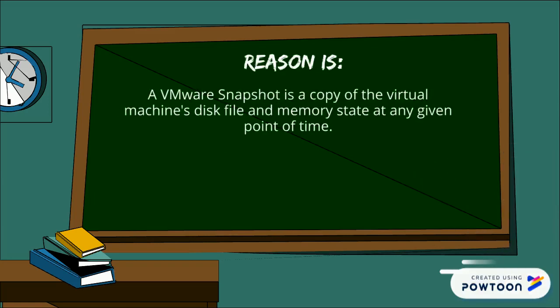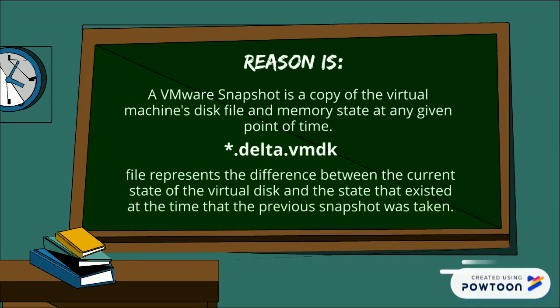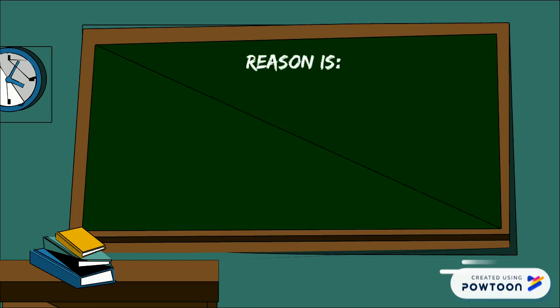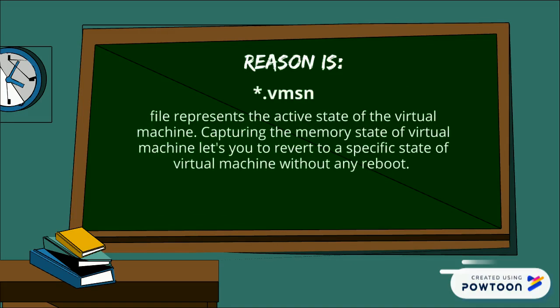A VMware snapshot is a copy of the virtual machine disk file and memory state at any given point in time. The delta.vmdk file represents the difference between the current state of the virtual disk and the state that existed at the time the previous snapshot was taken.